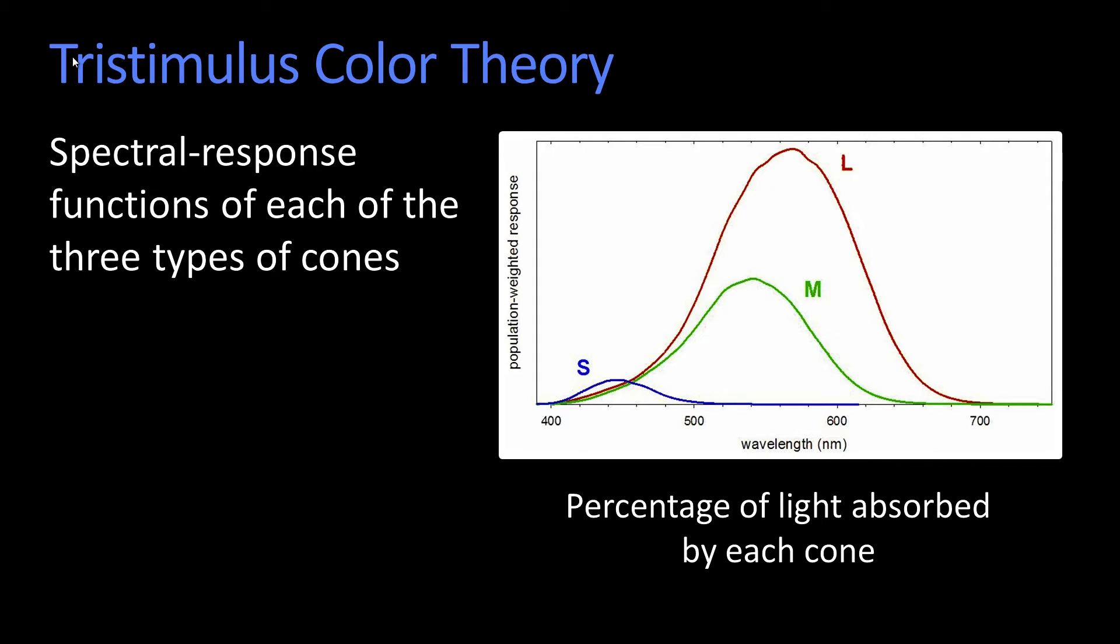In fact, this notion that there are three receptors that are absorbing light results in what's referred to as the tristimulus color theory. The idea is that it's three inputs.